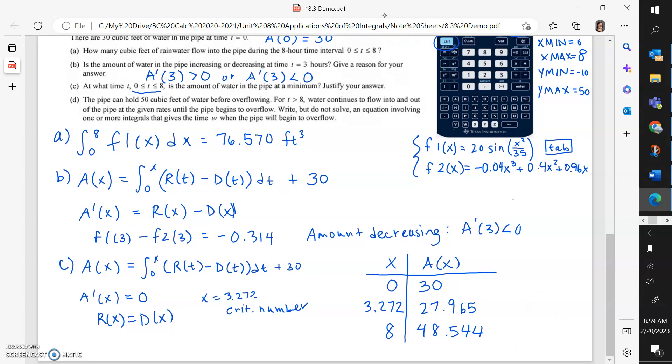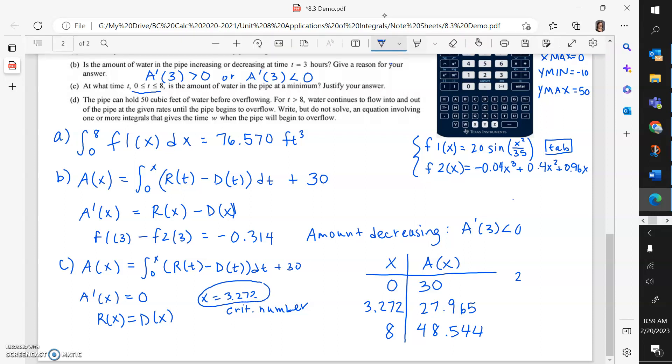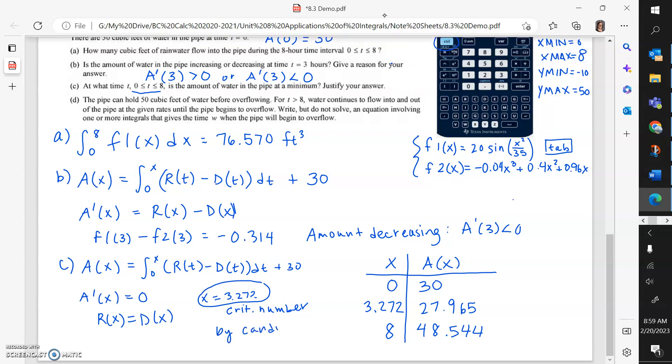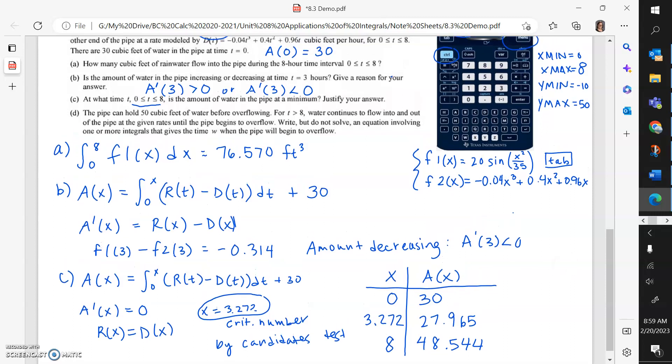And so my justification would be, at what time is it at a minimum, would be this time, because justification would be by the candidate's test. Make sure you do think about the endpoints. If you justify without the candidate's test, you should show that you are considering the endpoints.